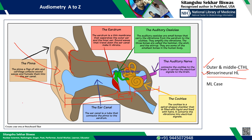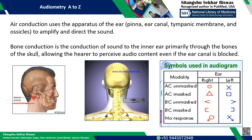In air conduction, sound is generated through a headphone and propagates through the outer and middle ear, then finally goes to the cochlea. So air conduction helps us understand problems in the ear canal — the outer ear and middle ear — while bone conduction helps us understand sensorineural type hearing loss. These are the standard symbols used in the audiometry chart.